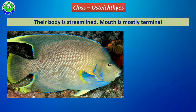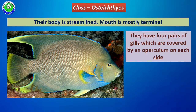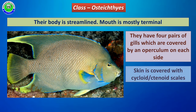All Osteichthyes members have four pairs of gills. These gills are covered by a covering called the operculum on both sides.